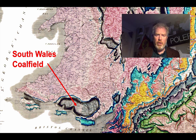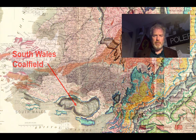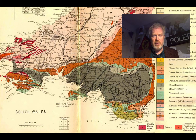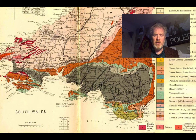If we look at a more modern map we can see there's more detail, particularly in the rocks surrounding the Coalfield. But Smith was pretty accurate in terms of the extent and the location of the coal-bearing rocks.